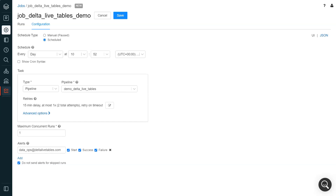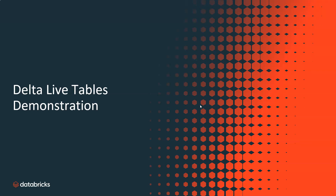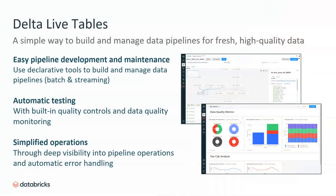To conclude, you have seen how Delta Live Tables abstracts complexity for managing ETL infrastructure by automating and maintaining all data dependencies with built-in quality controls, data quality monitoring, and deep visibility into pipeline operations with automatic recovery. This allows data engineering teams to focus on easily and rapidly building reliable, end-to-end, production-ready declarative data pipelines using only SQL or Python for batch and streaming workloads that deliver high-value data for analytics, data science, and machine learning use cases.